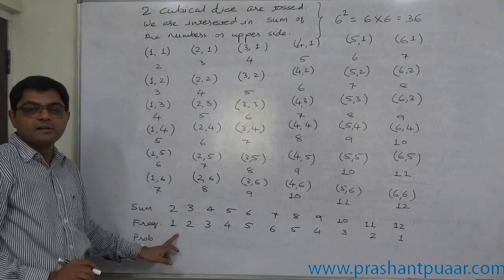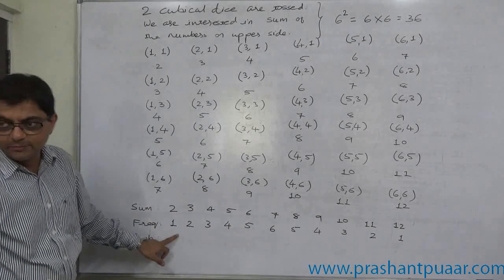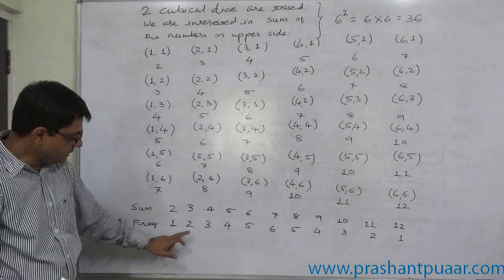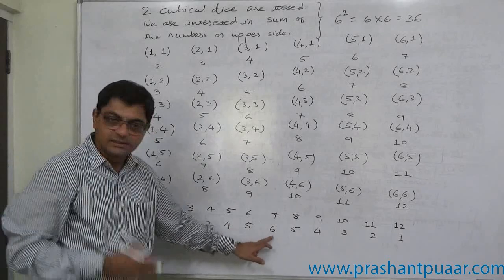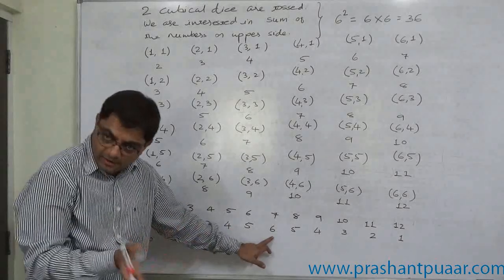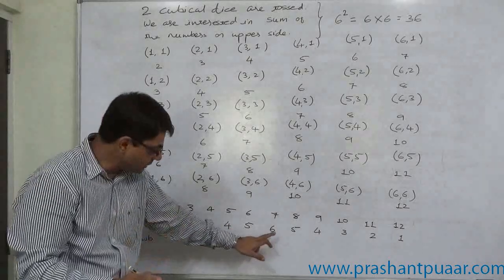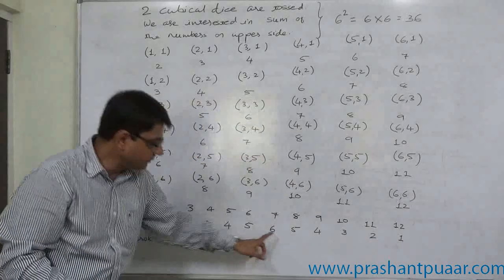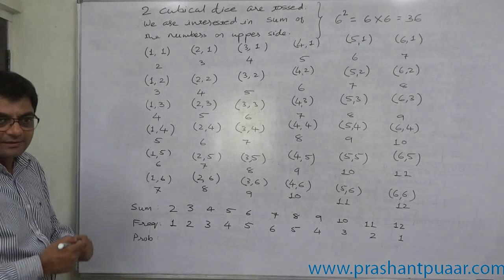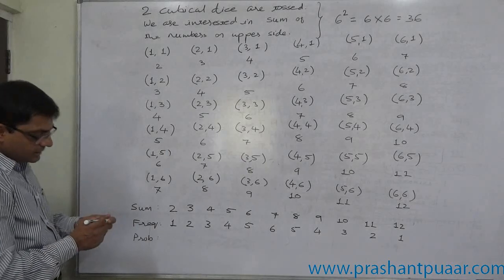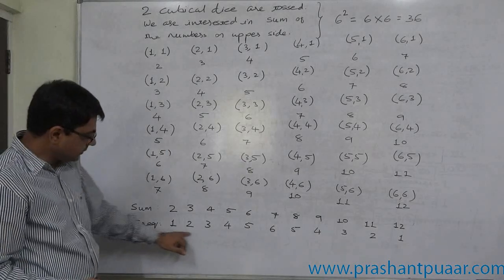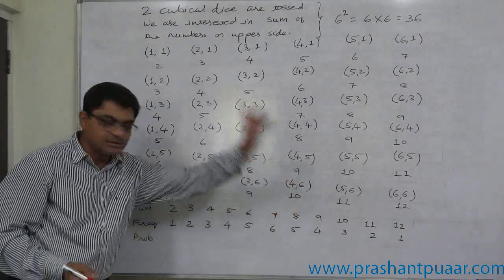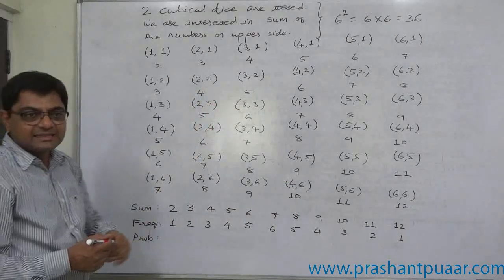See, this is the example of symmetric or well-shaped distribution. One, two, three, four, five, six in ascending order, and again the same descending order: six, five, four, three, two, one. Total is actually, it must be 36. One plus two plus three plus four plus five plus six.